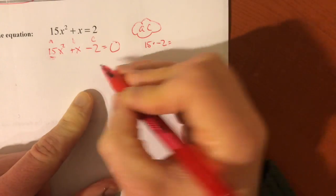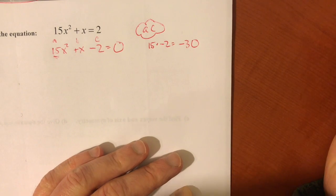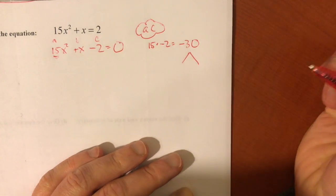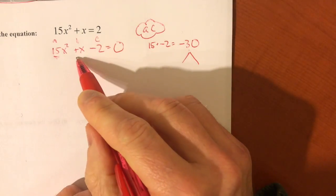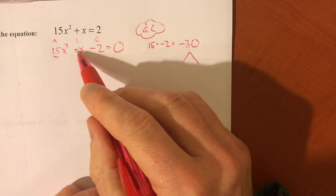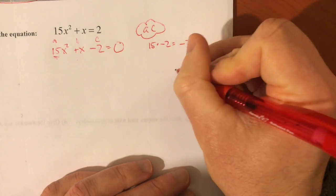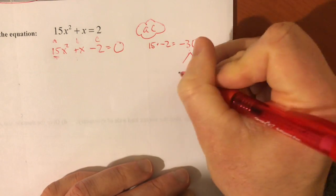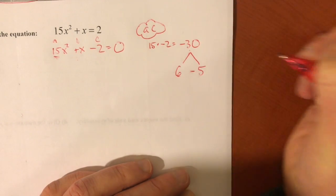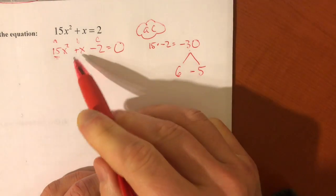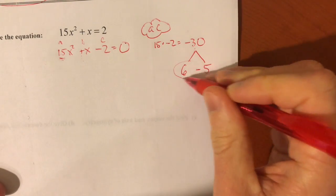And then the big goal here is to try to find two numbers that multiply to that, negative 30, but add up to what's in the middle, which is, in this case, positive 1. And this might take you some thought. You go through your options of 1 and 30, 2 and 15, 3 and 10. In this case, you want 6 and negative 5, right? One of them has to be negative, and in this case, the bigger one's got to be the positive one. So 6 and negative 5 are the two numbers.